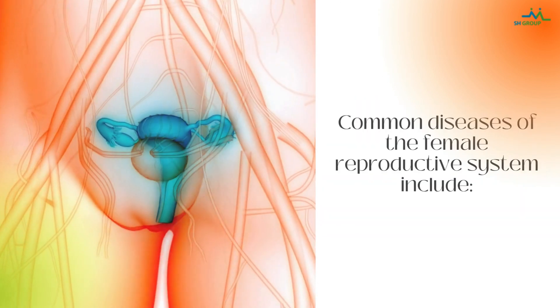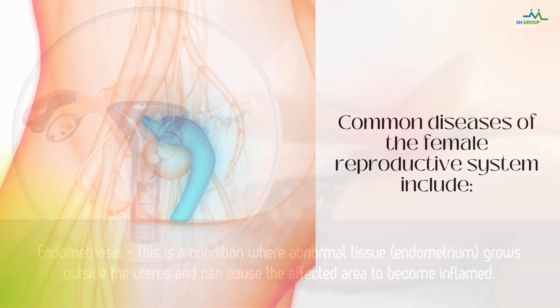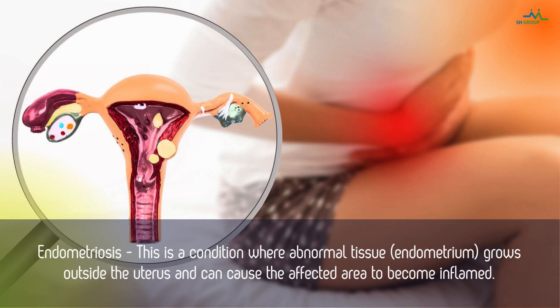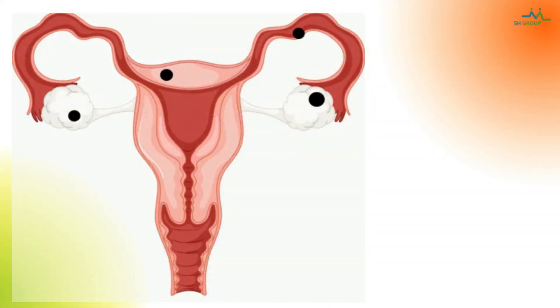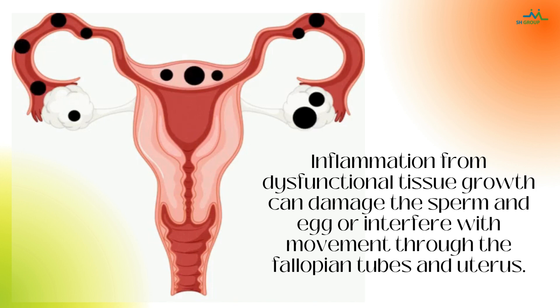Common diseases of the female reproductive system include Endometriosis. This is a condition where abnormal tissue, called endometrium, grows outside the uterus and can cause the affected area to become inflamed. Inflammation from dysfunctional tissue growth can damage the sperm and egg, or interfere with movement through the fallopian tubes and uterus.